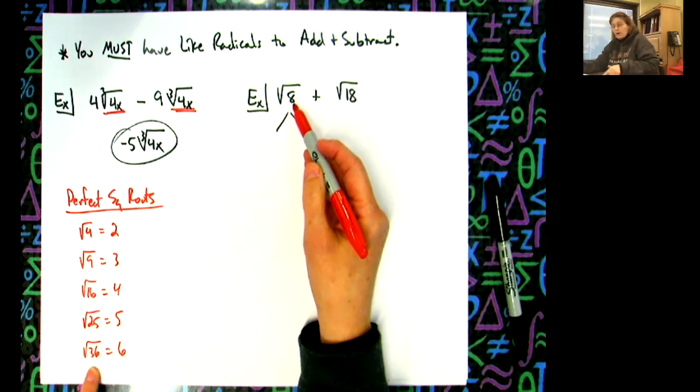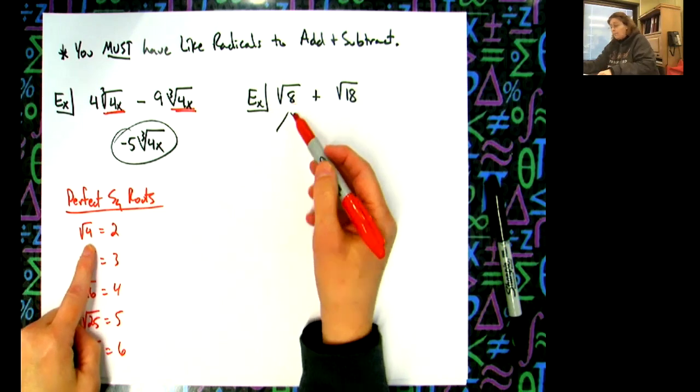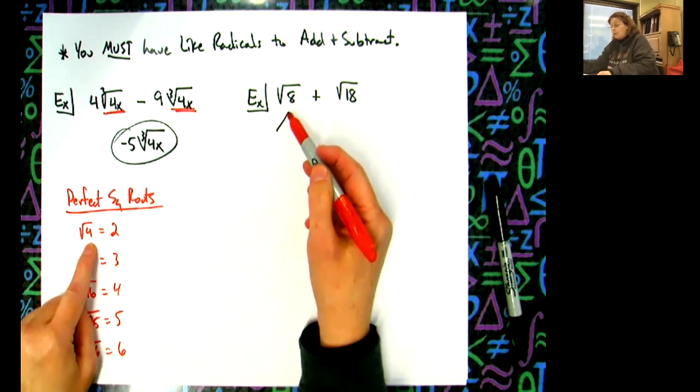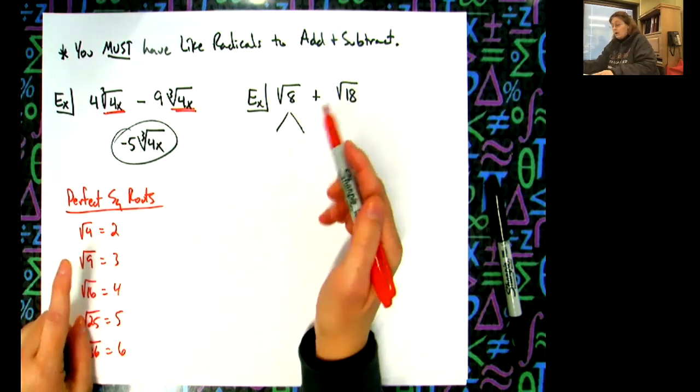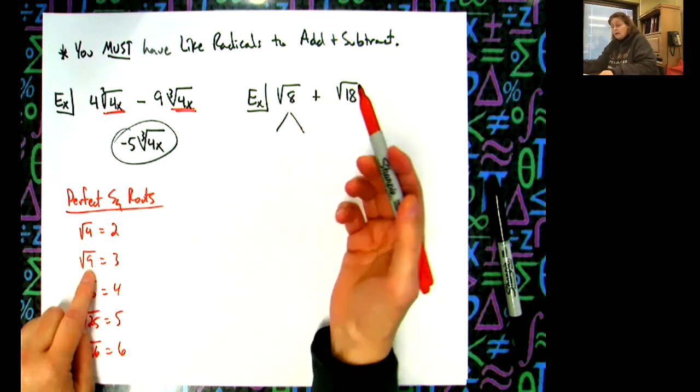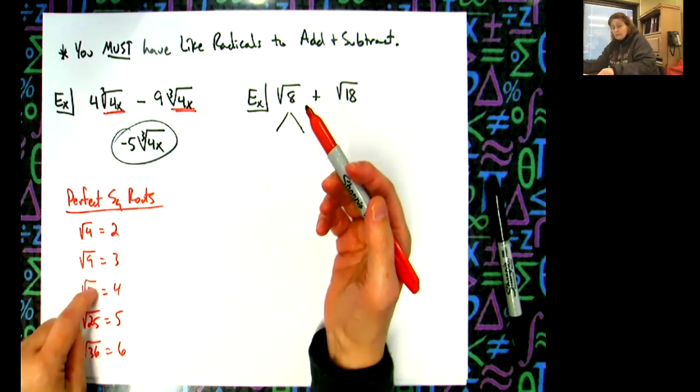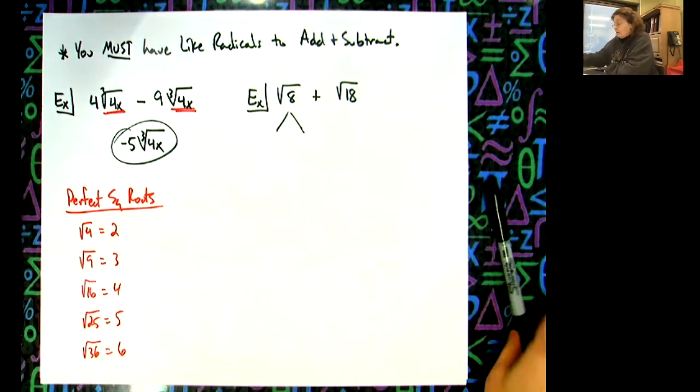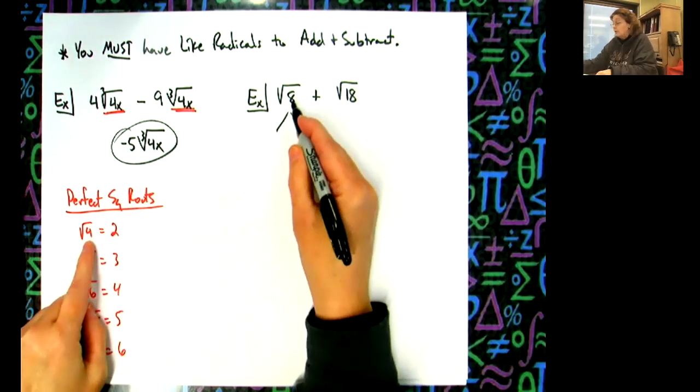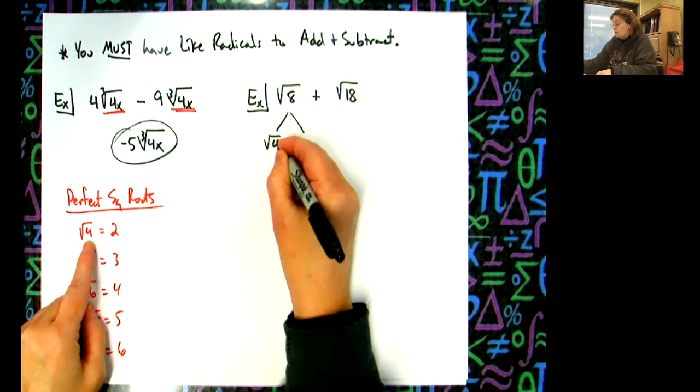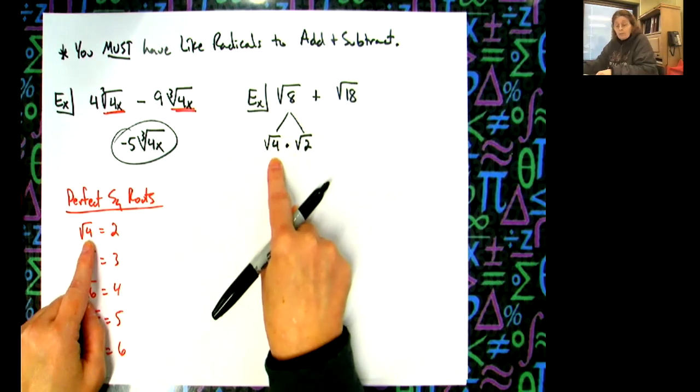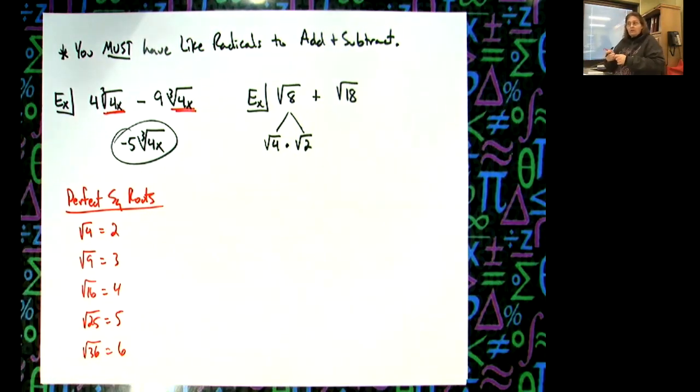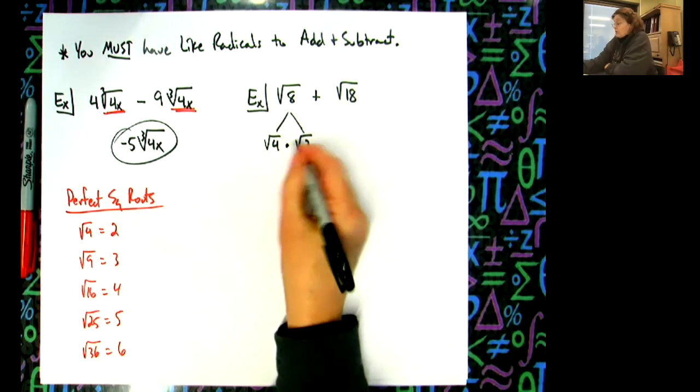Obviously this one's easy - you know it's 4. But if it was a much bigger number, I would divide by 4, then by 9, etc. to find the biggest perfect square. If I do that, my tree is very short. We said 4 is the biggest one that goes into 8, so √4 × √2. I always put the perfect square first because I know I can figure out what it is - this is 2, so this whole thing becomes 2√2.